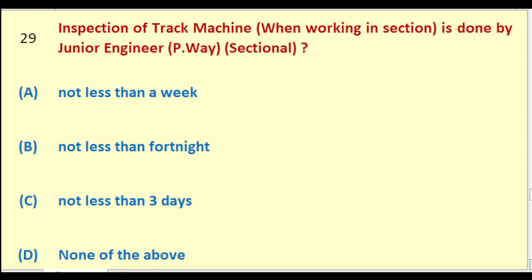Inspection of track machine when working in section is done by Junior Engineer Permanent Way Sectional: not less than a week; not less than a fortnight; not less than three days; none of the above. The right answer is: not less than a week.